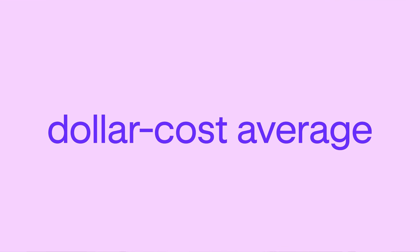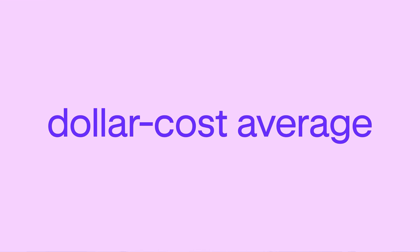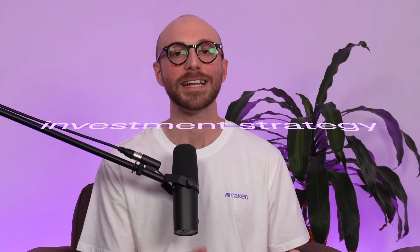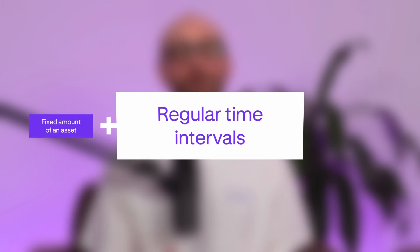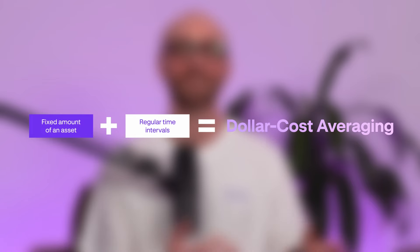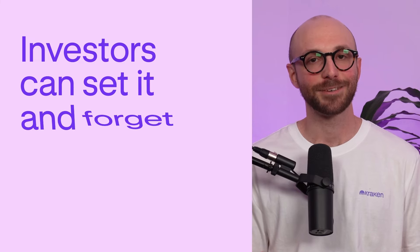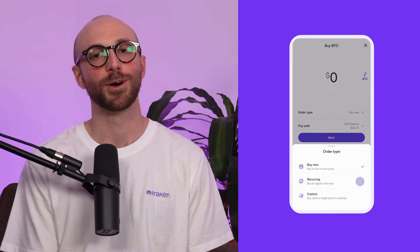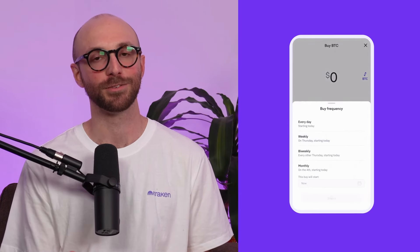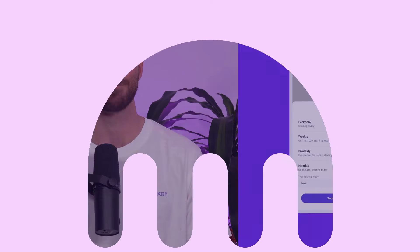The first thing to understand about dollar cost averaging is that it's an investment strategy where an individual purchases a fixed amount of an asset, such as a cryptocurrency, at regular intervals over an extended period of time. With dollar cost averaging, investors can set it and forget it, so they automatically purchase crypto on a regular basis, regardless of its market price.